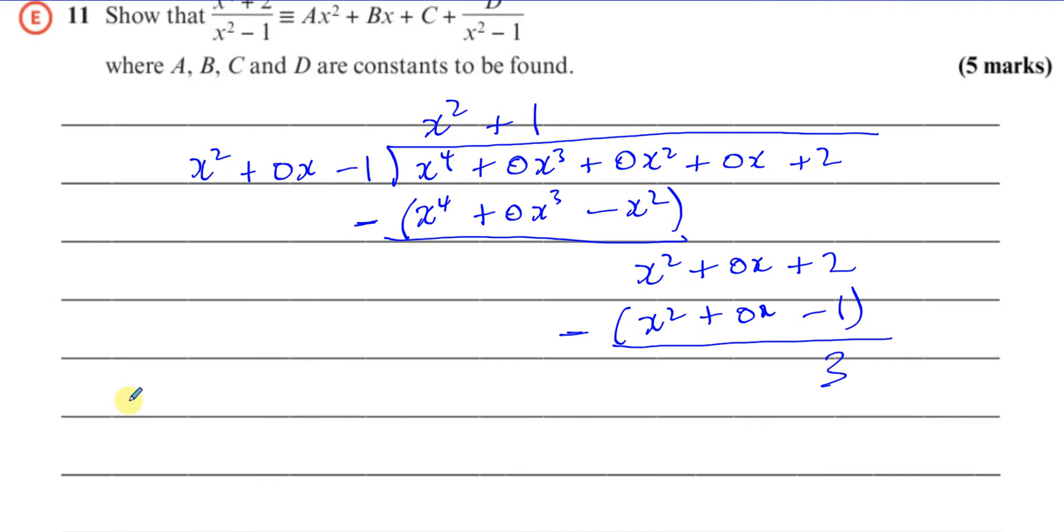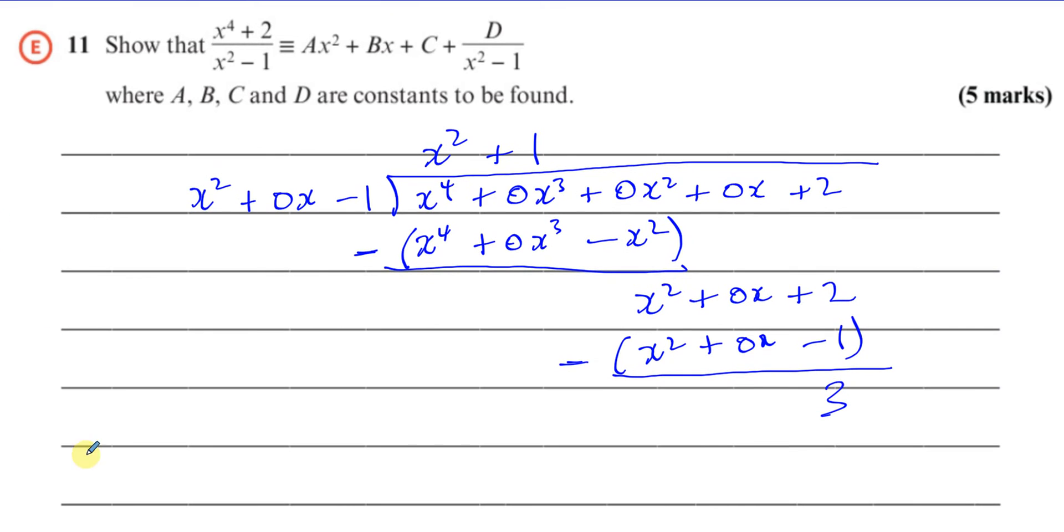So now I can say that when I divide x to the power of 4 plus 2 by x squared minus 1, I get x squared plus 1, plus the remainder is 3 over the original denominator, which is x squared minus 1. So that's the whole number part, and that's the remainder.